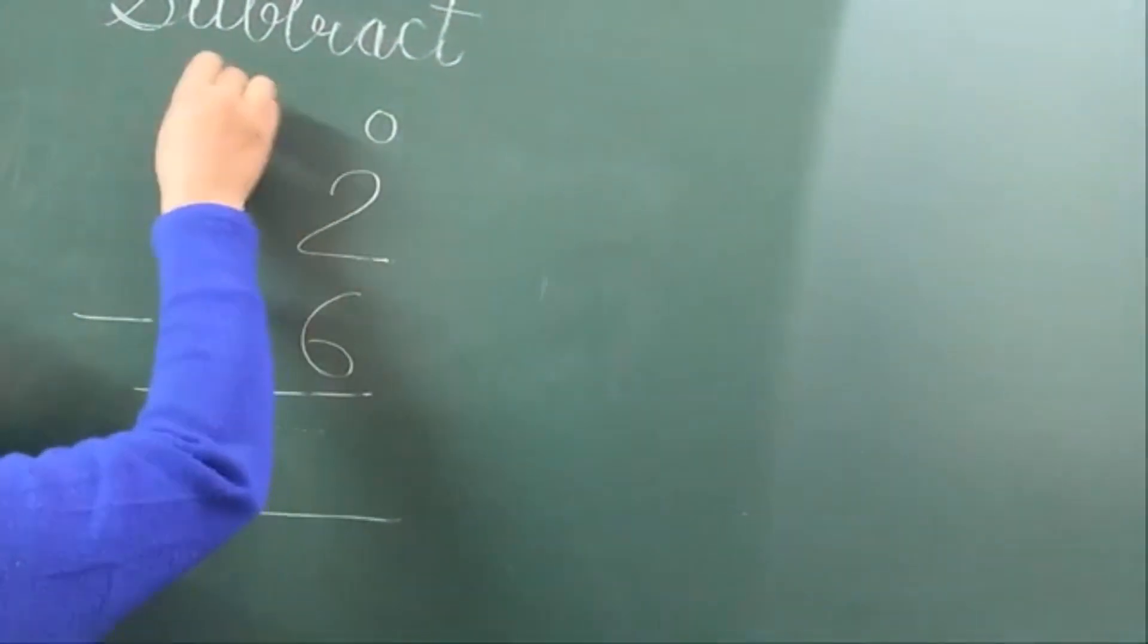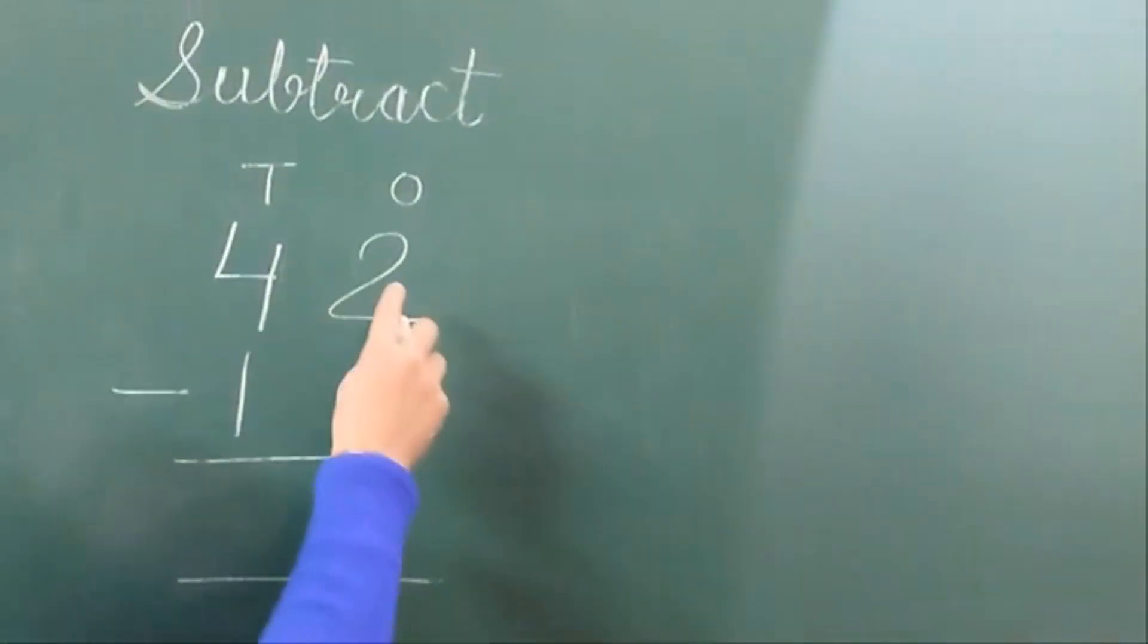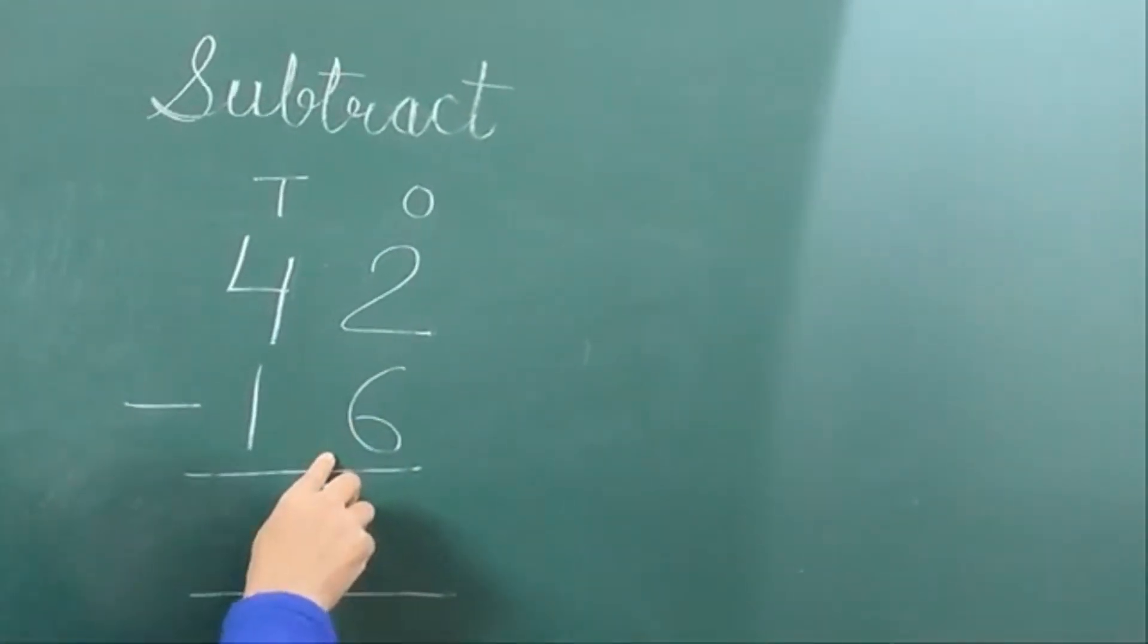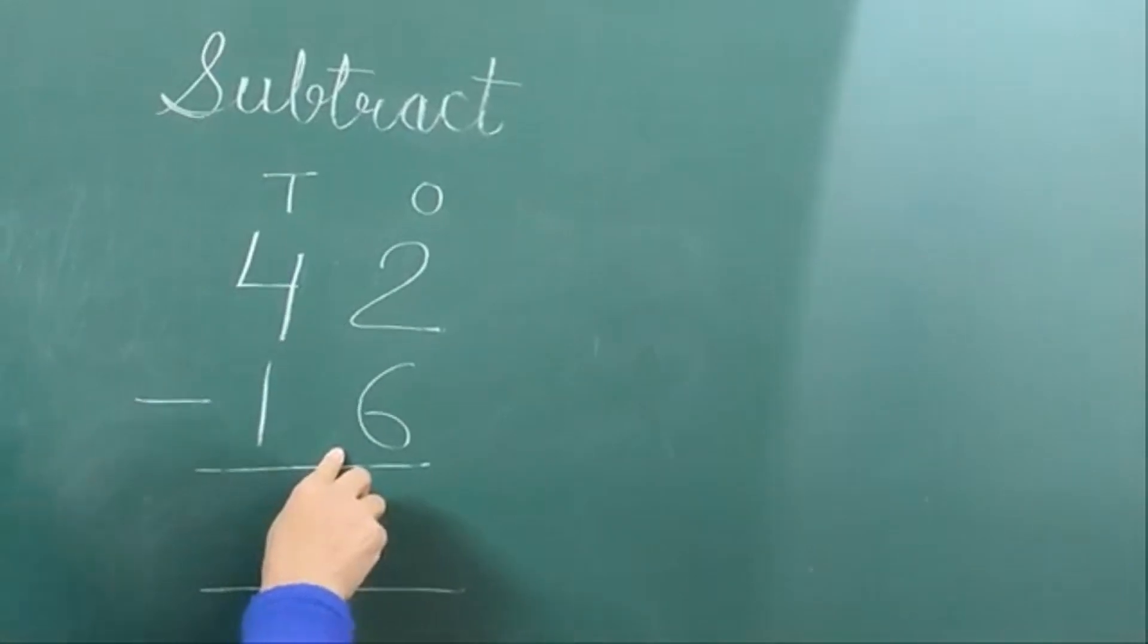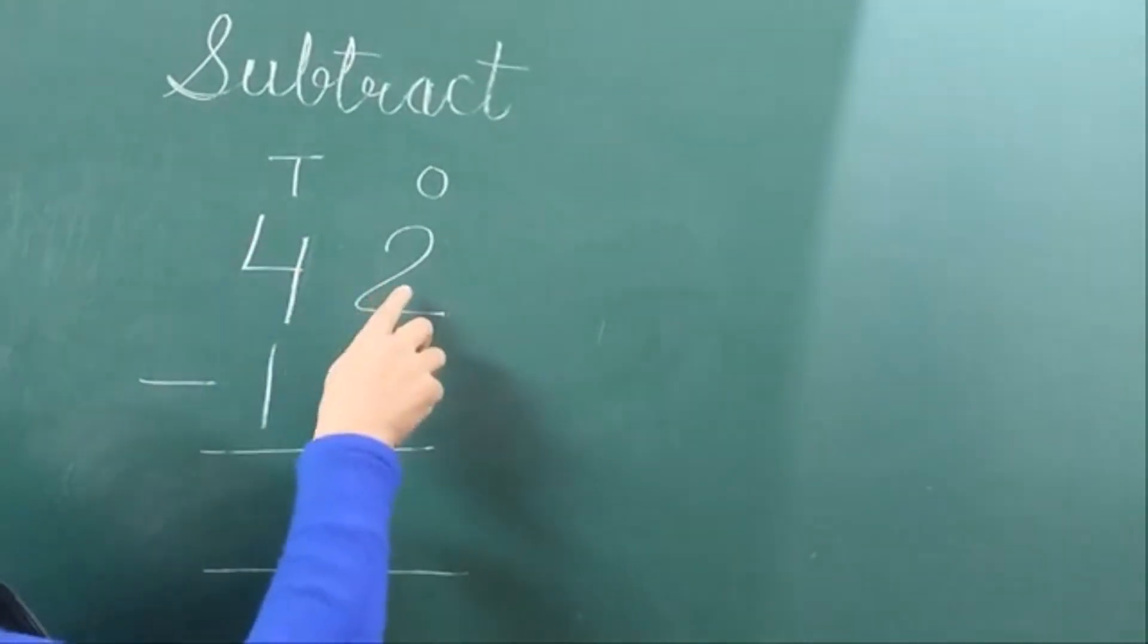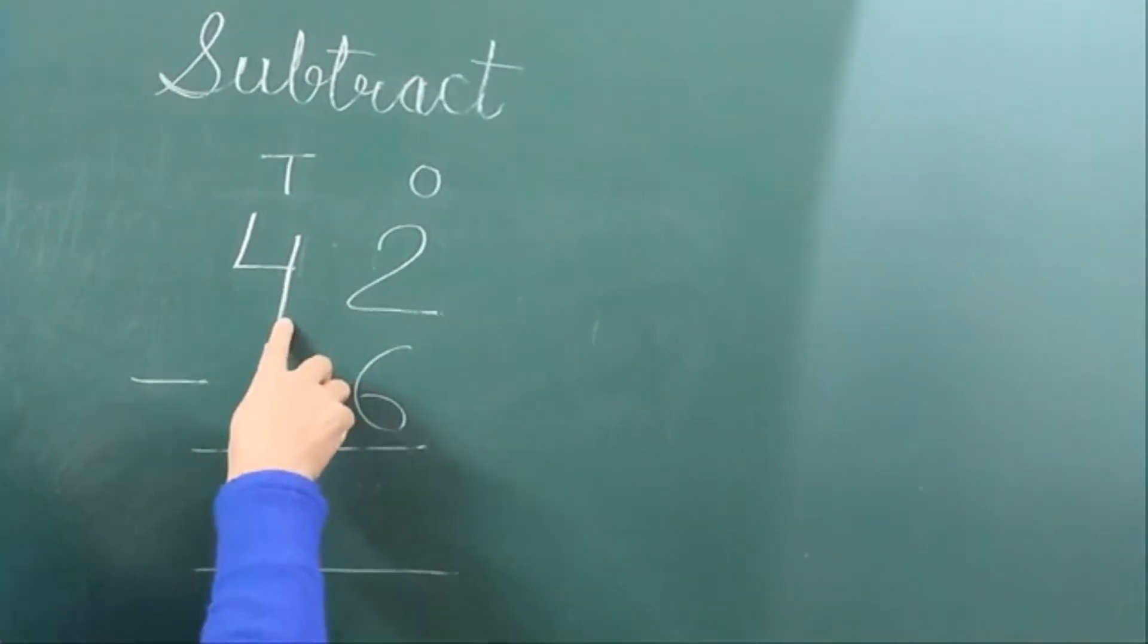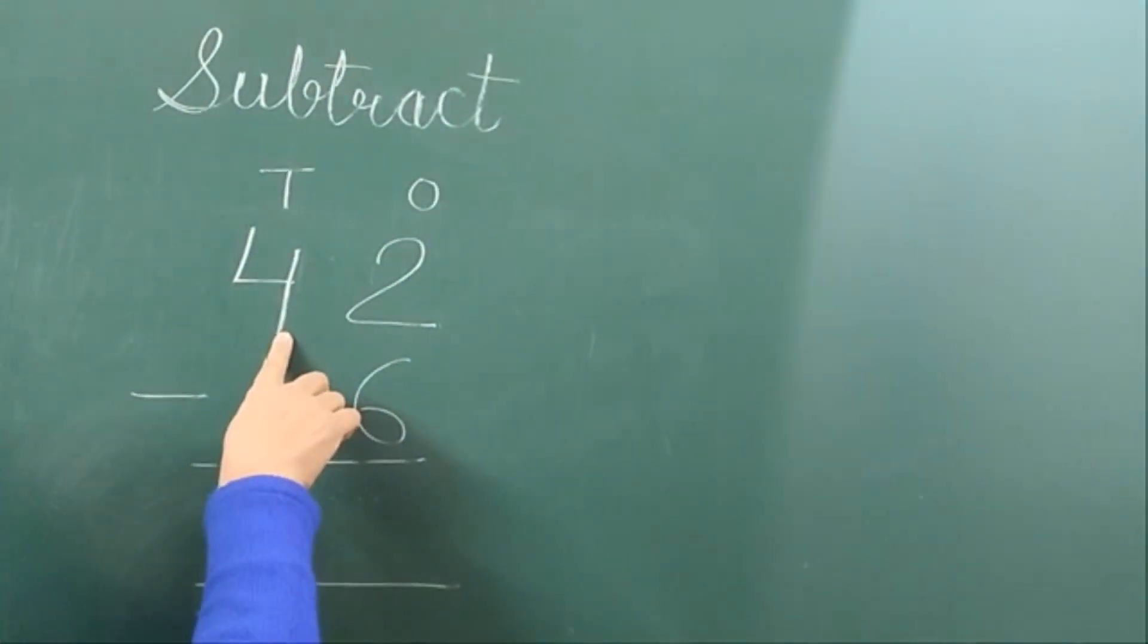This is the ones place, this is the tens place. At the ones place we have 2, and we need to subtract 6, which is not possible. So what will we do? We will borrow from the tens place. Borrow means take one ten.